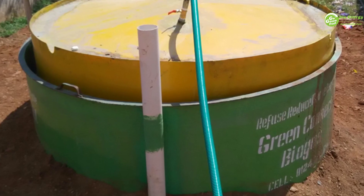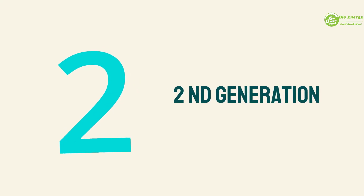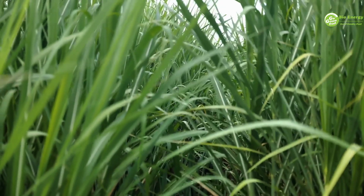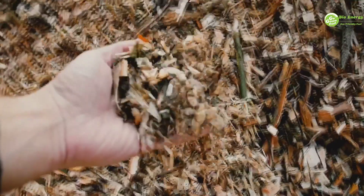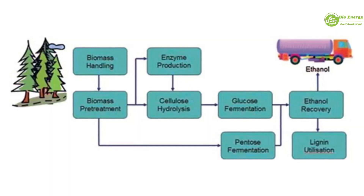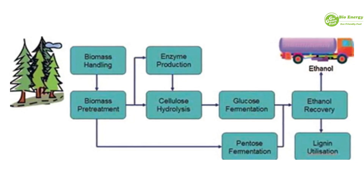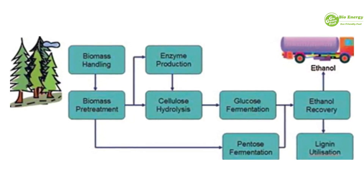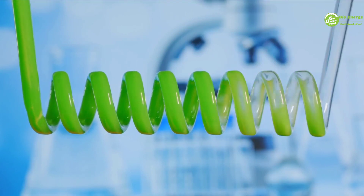Biogas is produced from food waste by biochemical pathways. Second generation biofuels include plant, wood, organic waste, specific biomass crops, and lignocellulosic biomass. Converting cellulose to sugar to ethanol involves thermochemical or biochemical pathways, yet advanced technologies still need to be developed to meet demand and supply.